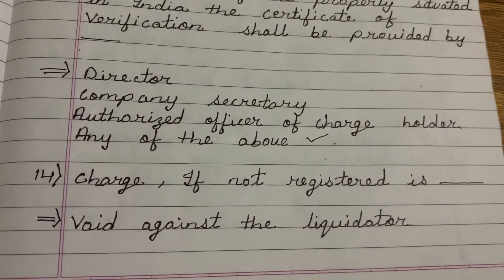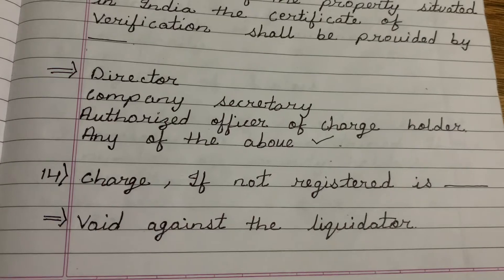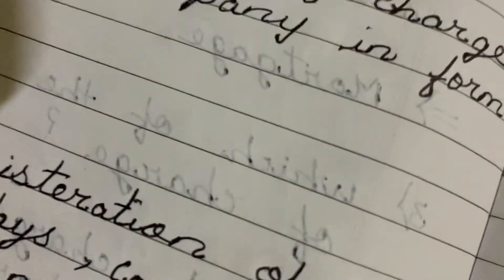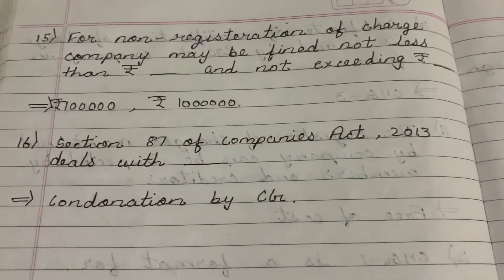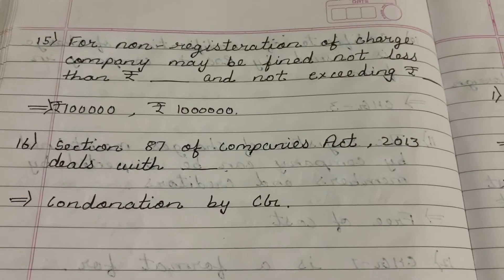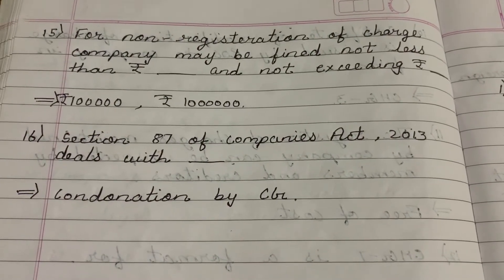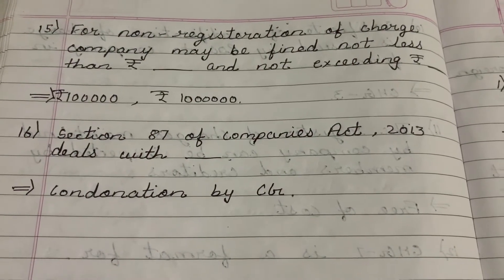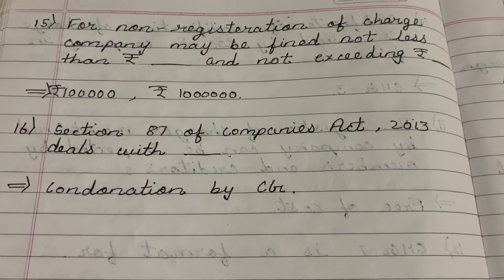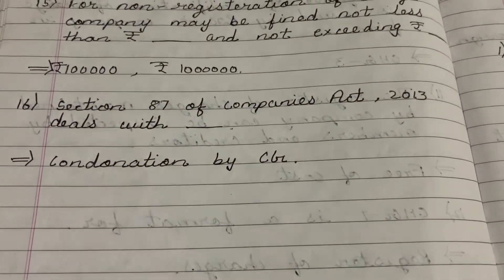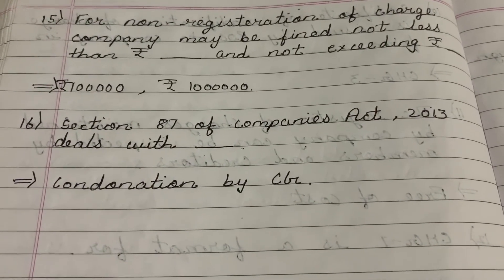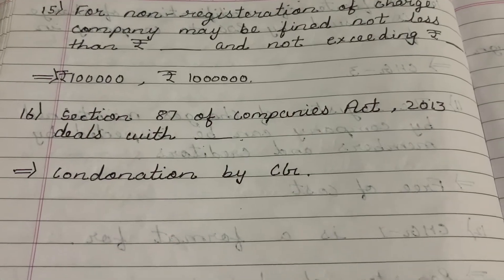A charge, if not registered, is void against the liquidator. For Non-Registration of Charge, the company may be fined not less than Rupees 1 lakh and not exceeding Rupees 10 lakh. Section 87 of Companies Act 2013 deals with condonation by the Central Government.